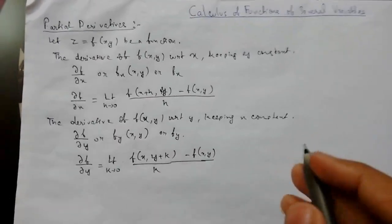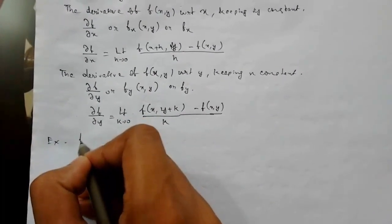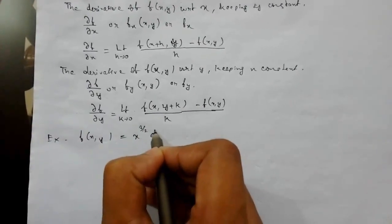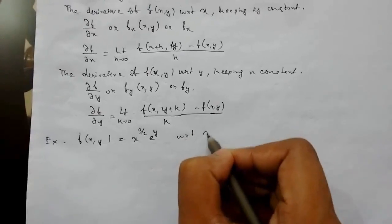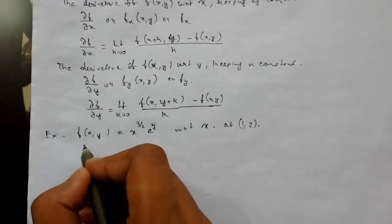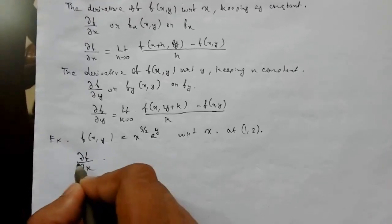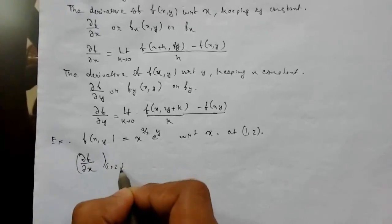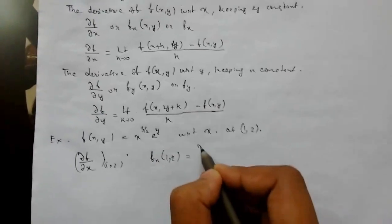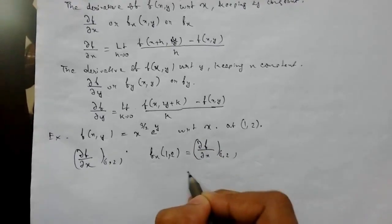To understand this, let's see a simple example. Suppose we need to find the partial derivative of f(x, y) = x^(3/2) · e^y with respect to x at the point (1, 2). So we need to find f_x(1, 2), which equals ∂f/∂x evaluated at (1, 2).